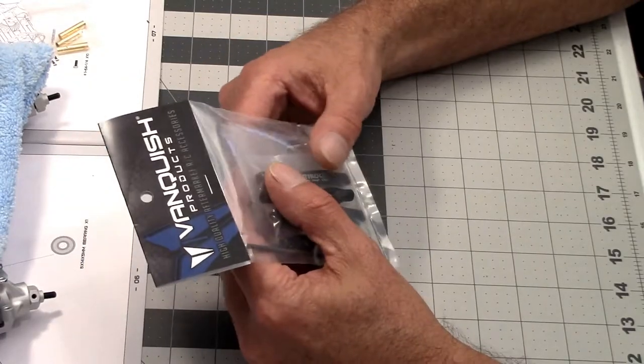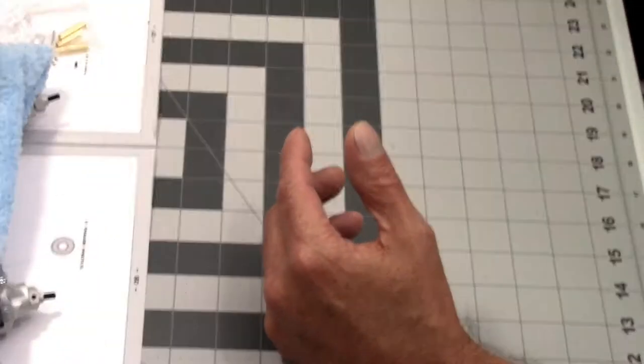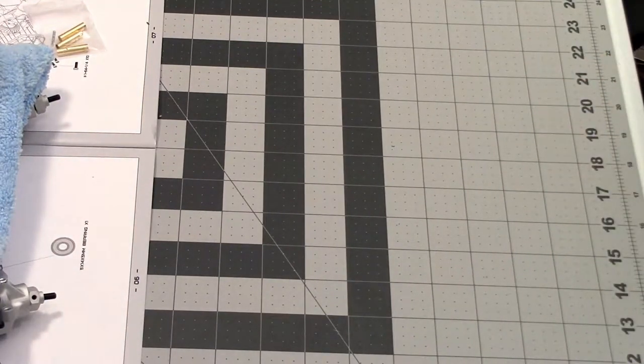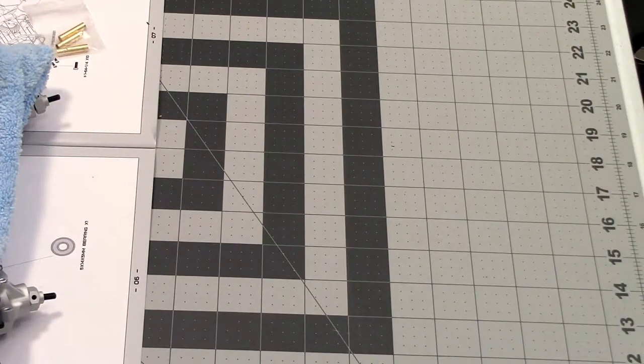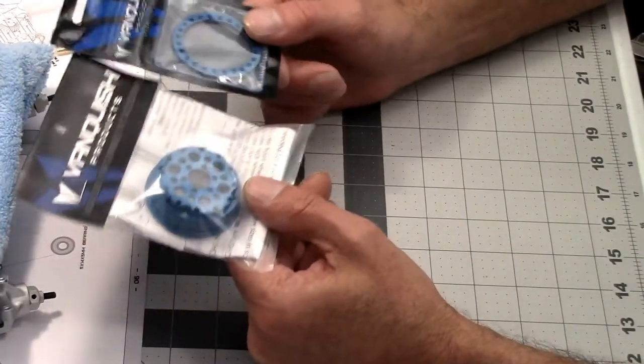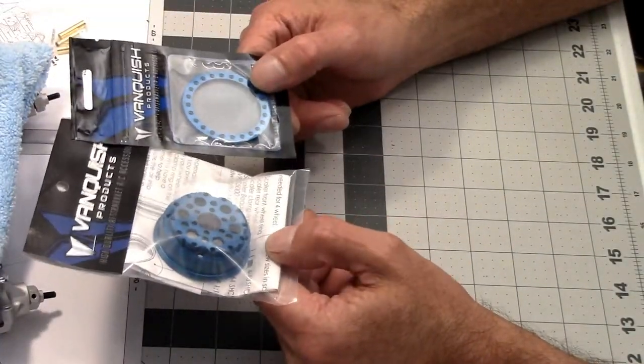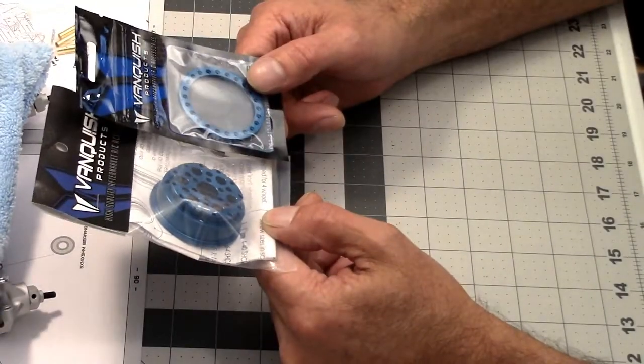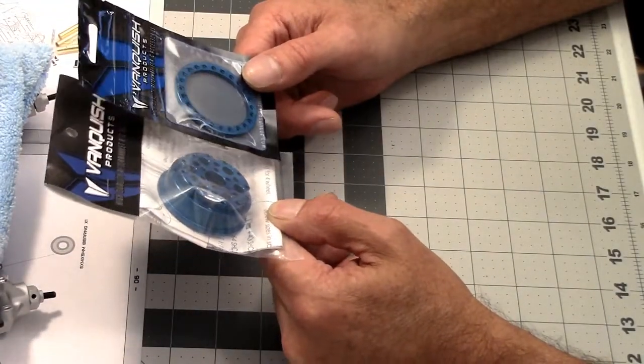And also while we're talking about blue stuff, I also have a set of blue OMF wheels. So we're going blue on this truck simply because I have blue stuff laying around that I've had for a while. Figure I might as well use it.